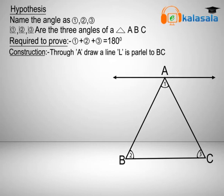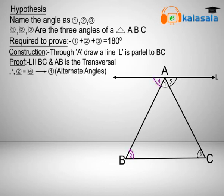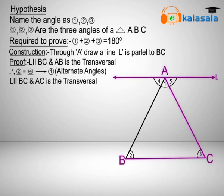Draw a line through A which is parallel to BC. Proof: L is parallel to BC and AB is the transversal. Therefore angle 2 equals angle 4, as they are alternate angles — take this as equation number 1. Since L is parallel to BC and AC is the transversal, angle 3 equals angle 5, as they are alternate angles — this is equation number 2.